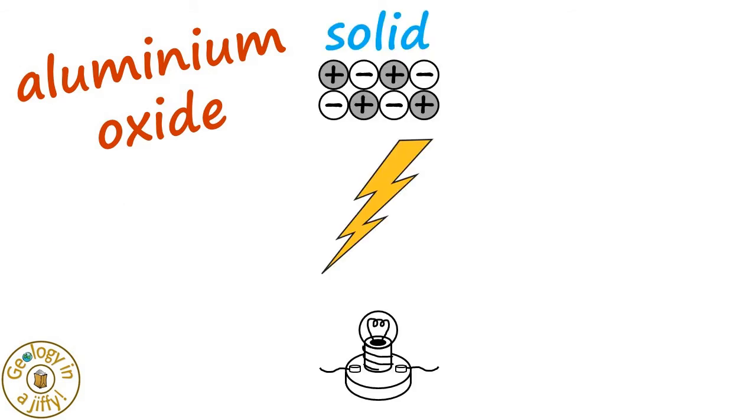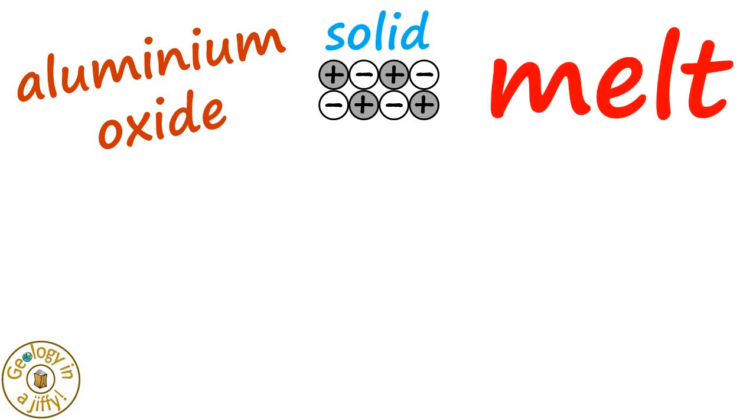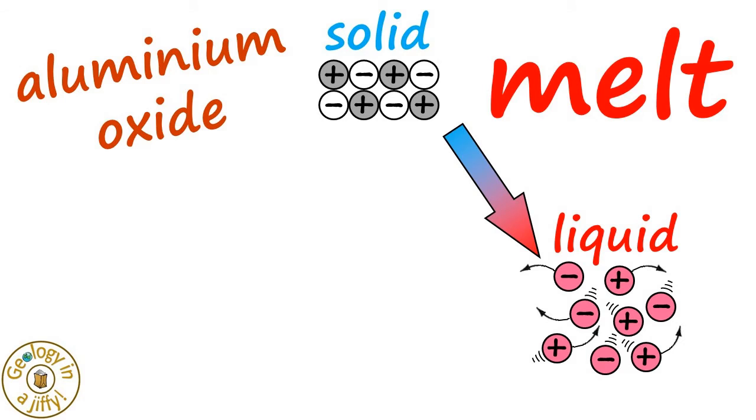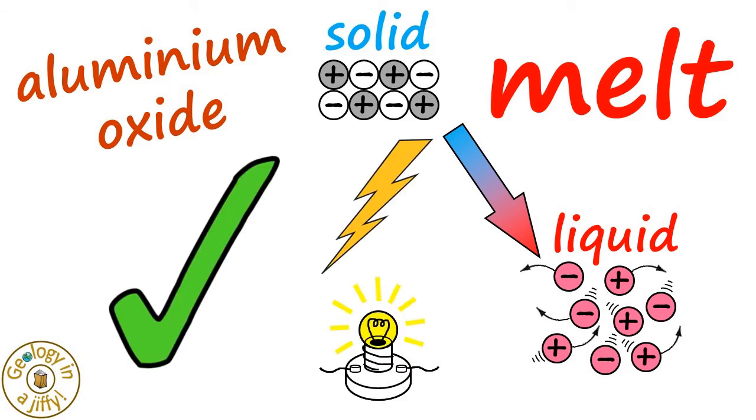When electricity is passed through it, it will not conduct, meaning we have to melt it, enabling the ions to be free to move in the liquid and conduct an electrical current.